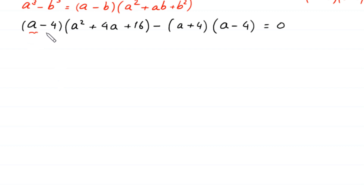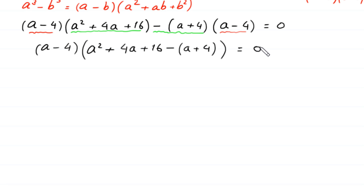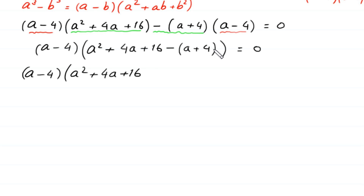As you can see, the expression (a minus 4) appears as a common factor in both terms. So we factor out (a minus 4), leaving in the bracket: (a squared plus 4a plus 16) minus (a plus 4), all equal to 0.